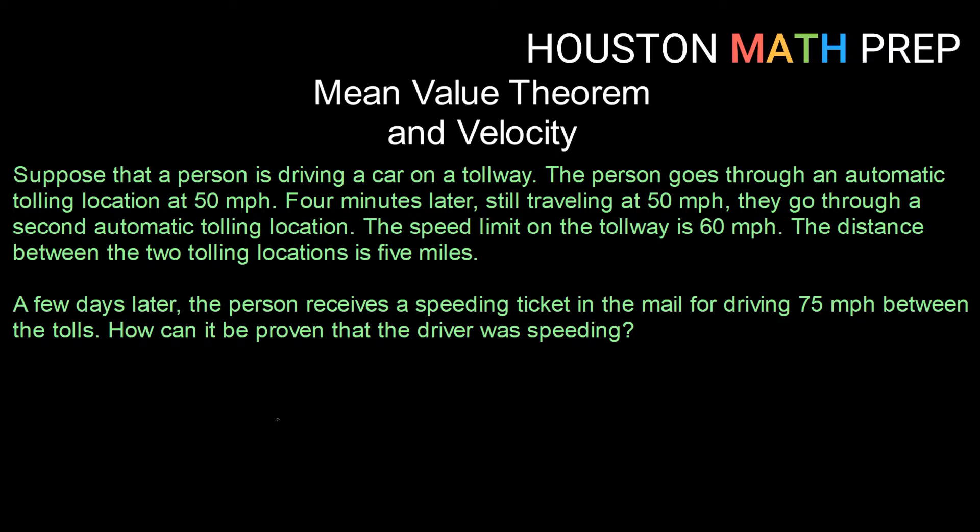So here's the scenario. Suppose that a person is driving a car on a tollway. The person goes through an automatic tolling location at a speed of 50 miles per hour. Four minutes later down the road, still traveling at 50 miles per hour, they go through a second automatic tolling location. The speed limit on this particular stretch of the tollway is 60 miles per hour, and the distance between the first and second tolling locations is 5 miles.